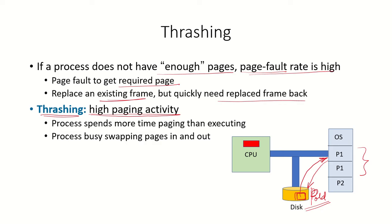Thrashing means continuously or very frequently a process is facing page faults and it needs to bring pages which are not in the main memory from the hard disk. The process is spending more time in paging — bringing pages from secondary storage to memory — and not spending time executing. Most of the time is spent on this I/O from secondary storage; the process is busy swapping pages in and out.